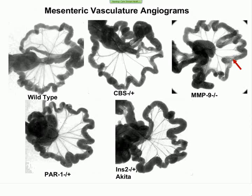Coming to the next slide, I exposed the mesentery of the mouse. You can see there is increased vascular density in the MMP9 knockout mouse model compared to the wild type, and there is decreased vascular density in the CBS mouse, which is the hyperhomocysteinemia model. This technique can also be used to detect ischemia to the gut wall, or if you create a gut carcinoma, you can see any increase in vascular density to that carcinoma. You can customize this study according to your need.